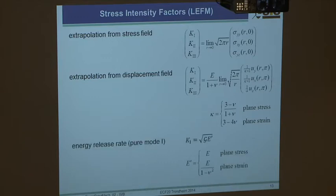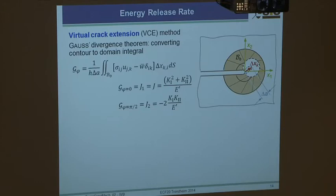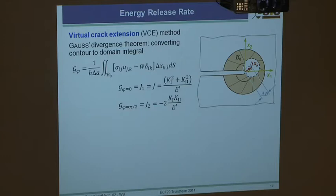You can use the energy release rate G with G = K²/E' for pure mode one, where plane stress or plane strain is a question. In Abaqus and other programs this is calculated by the virtual crack extension method: energy release rate means how the energy of the structure changes if the crack extends by a small virtual amount. You extend it numerically and calculate the change in energy to get the energy release rate.